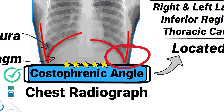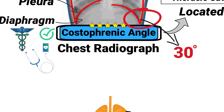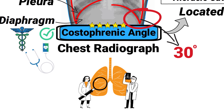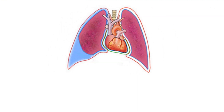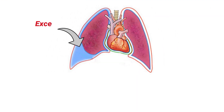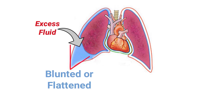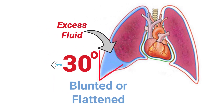During a normal chest x-ray, the costophrenic angle forms a sharp angle of approximately 30 degrees. However, if a patient has a lung disease that causes excess fluid to build up, it can cause the costophrenic angle to appear blunted or flattened, making that 30-degree angle appear closer to 90 degrees.